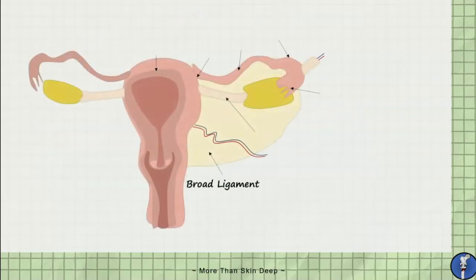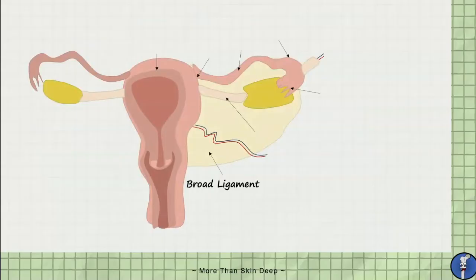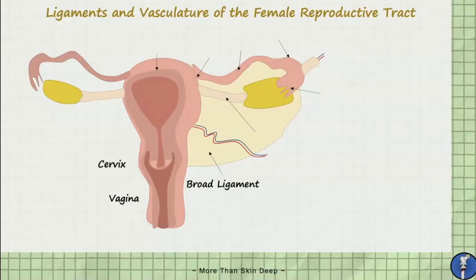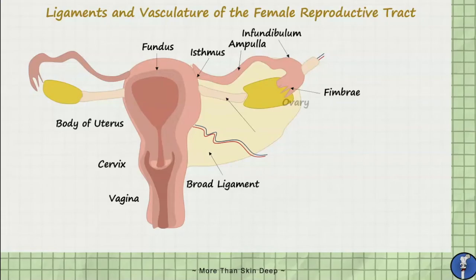The female reproductive tract is comprised of the vagina inferiorly, the cervix, the body of the uterus, and the fundus of the uterus. Each uterine tube or fallopian tube has an isthmus, ampulla, infundibulum, and fimbriae, which extend towards the ovary.